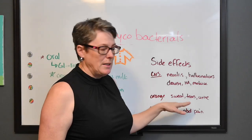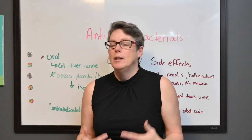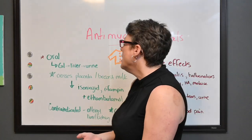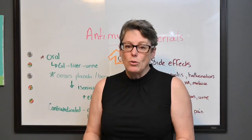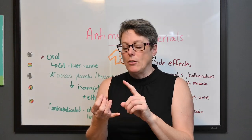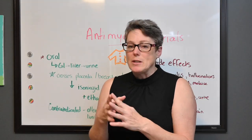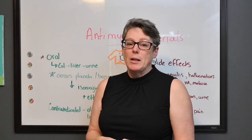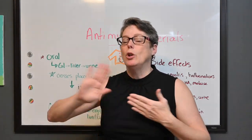In addition to orange sweat and tears, there is also orange urine. GI side effects — nausea, vomiting, and abdominal pain — are important to teach patients. For oral medications, onset is typically 15 to 30 minutes, peak is one to two hours, and duration can be up to 24 hours. Remember, these patients will be on these medications for months — these are long-term medications.